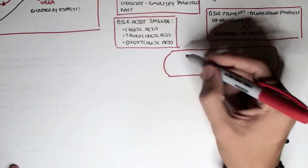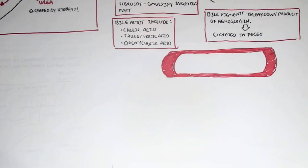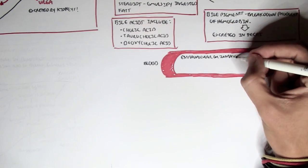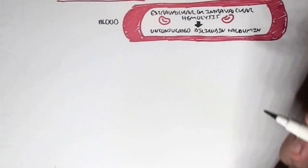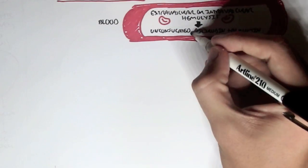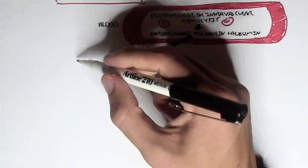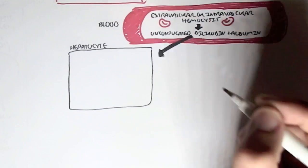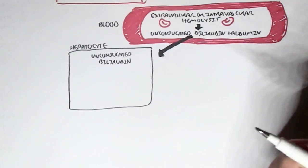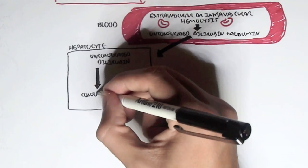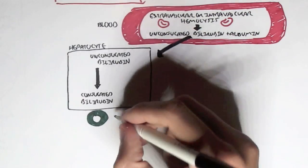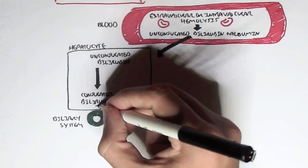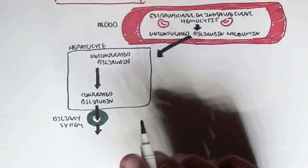In the blood, if there's extravascular or intravascular hemolysis, meaning destruction of red blood cells, the outcome of this would be unconjugated bilirubin, which is the product of destruction of red blood cells. These unconjugated bilirubin will travel through the bloodstream bound to albumin, which will then take it to the liver, the hepatocytes of the liver. Unconjugated bilirubin will then be changed to conjugated bilirubin in the liver. Conjugated bilirubin is the bile pigment because it is the product of breakdown of hemoglobin. This bile pigment, this conjugated bilirubin, will then travel through the biliary system, through the bile duct, into the intestines.